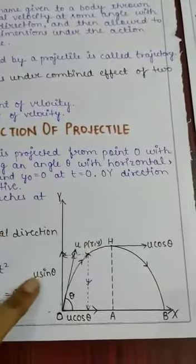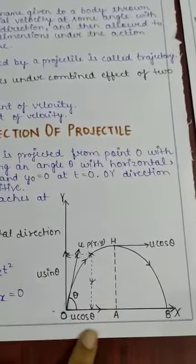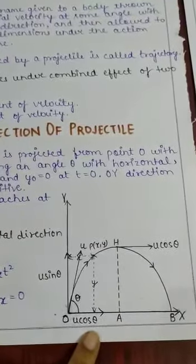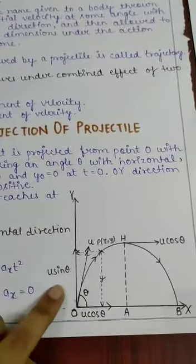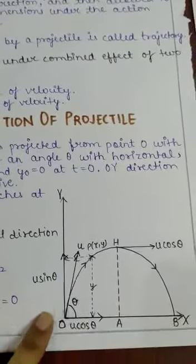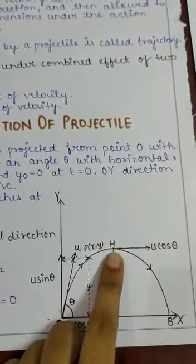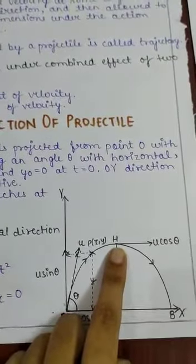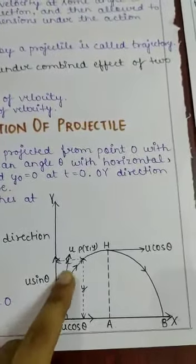Us velocity ko hum, do components mein break kar lenge, toh humare paas horizontal component hoga, u cos theta, jo constant rahta hai, aur vertical component hoga, u sin theta. Jab hum O se H pe jayenge, toh hum against the gravity jayenge, is liye, hamara vertical component, har point pe decrease hota rahega.